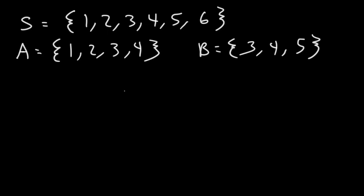Given this information, what is the probability of event A and event B occurring? What do you think the answer is to this question?